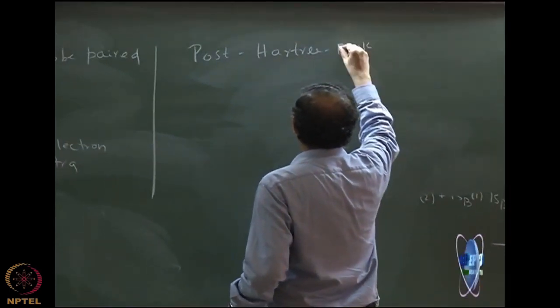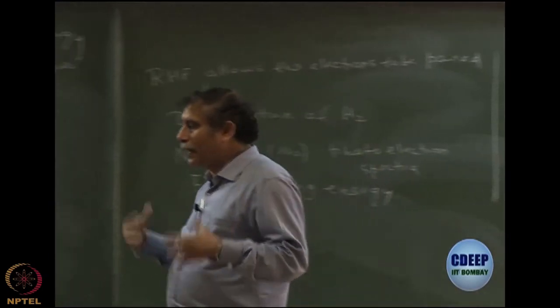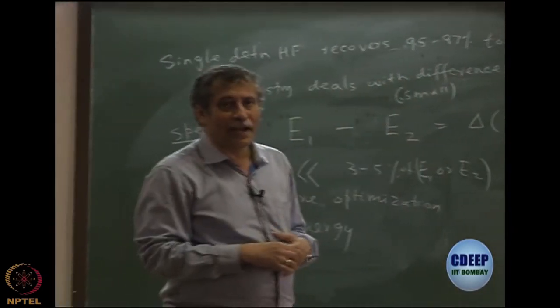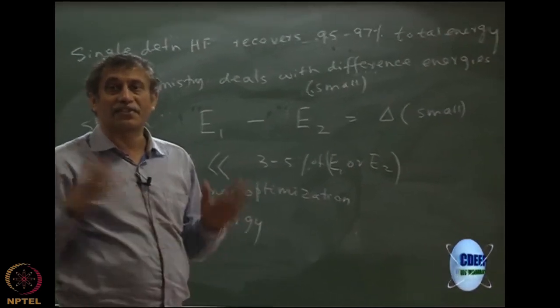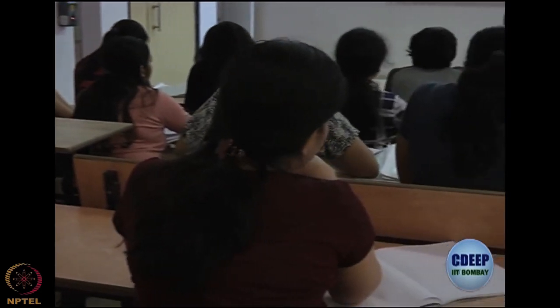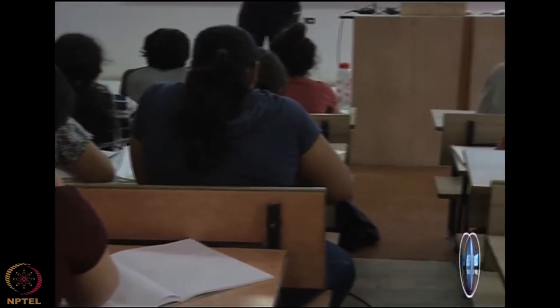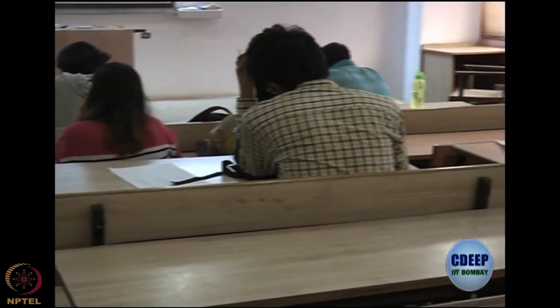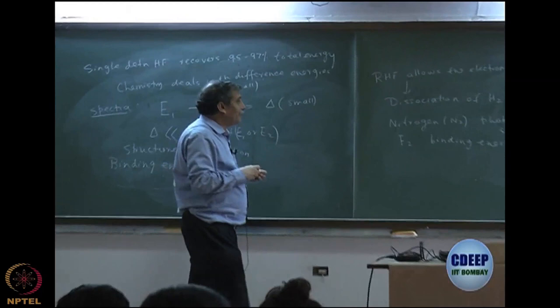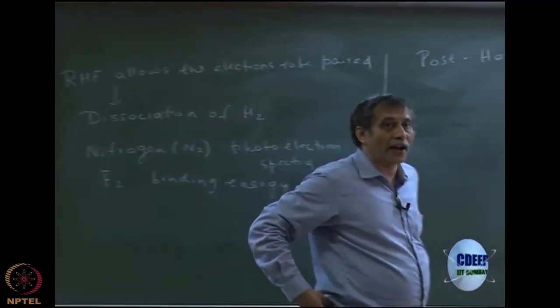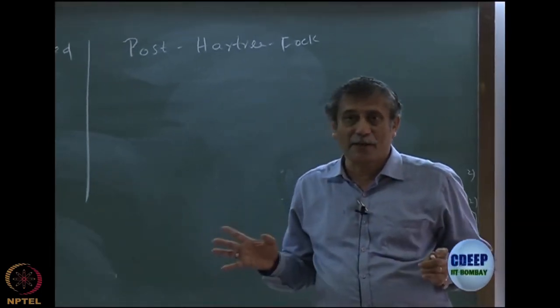Going beyond single determinant is not very difficult mathematically, but the chemistry becomes harder to interpret. When you have two determinants, like sigma_G² and sigma_U², you can no longer say definitively whether electrons are in sigma_G or sigma_U — they are in a quantum superposition. Sometimes they are in sigma_G, sometimes in sigma_U. The chemistry becomes very difficult to interpret, but the situation warrants that we must go beyond single determinant.